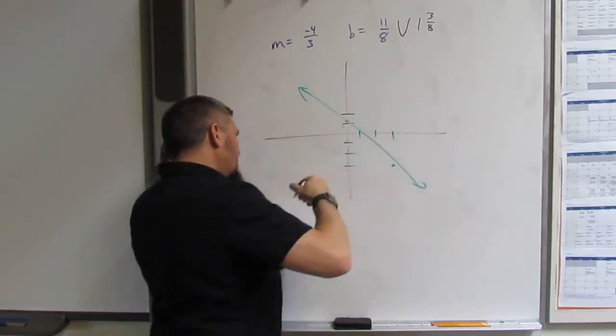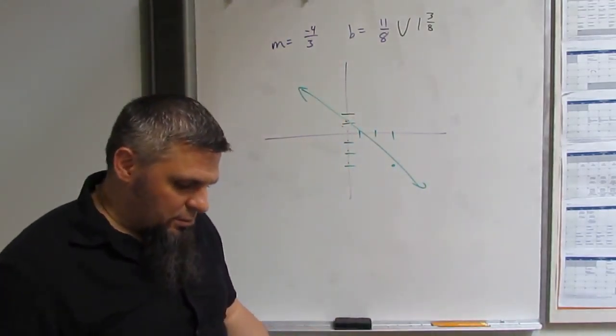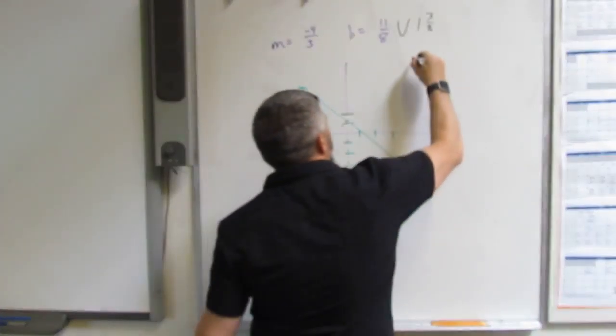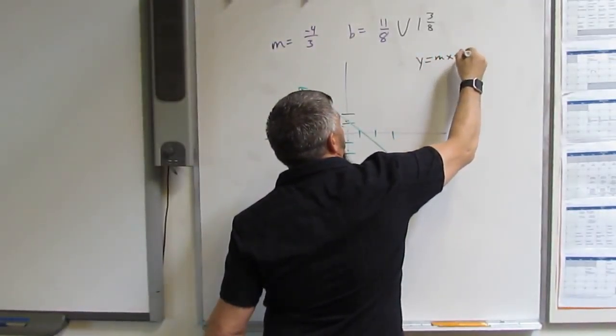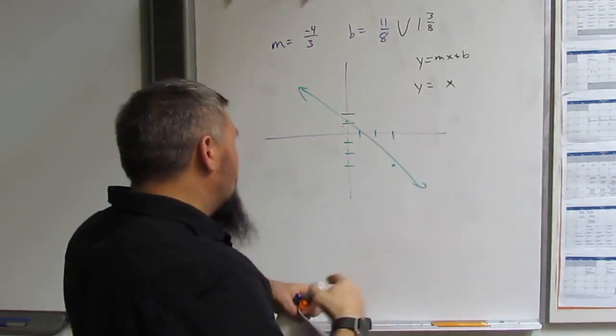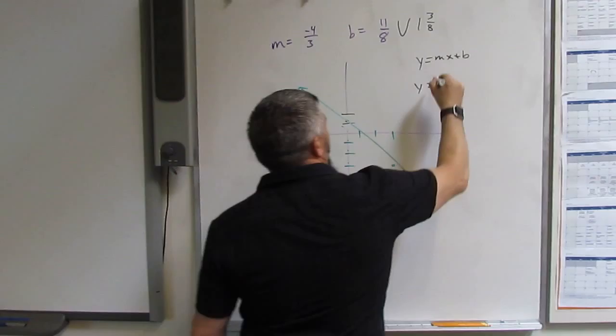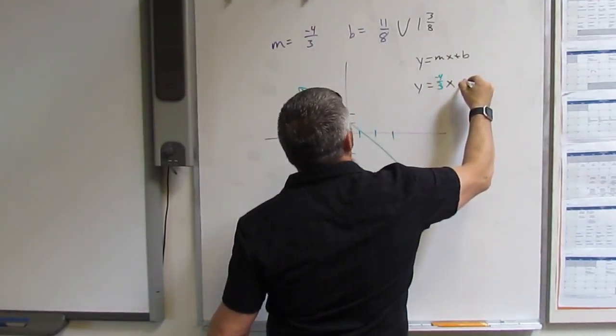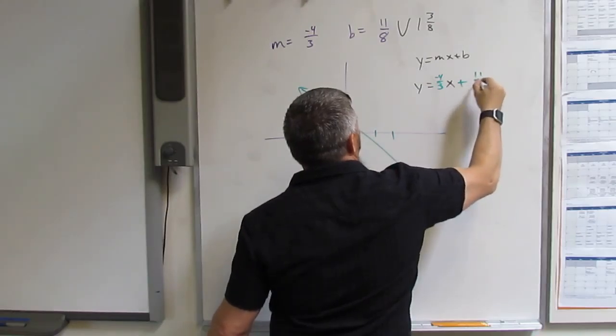Okay, there's my line. Now y equals mx plus b. y equals... Now you just plug in negative 4/3 and plus 11/8.